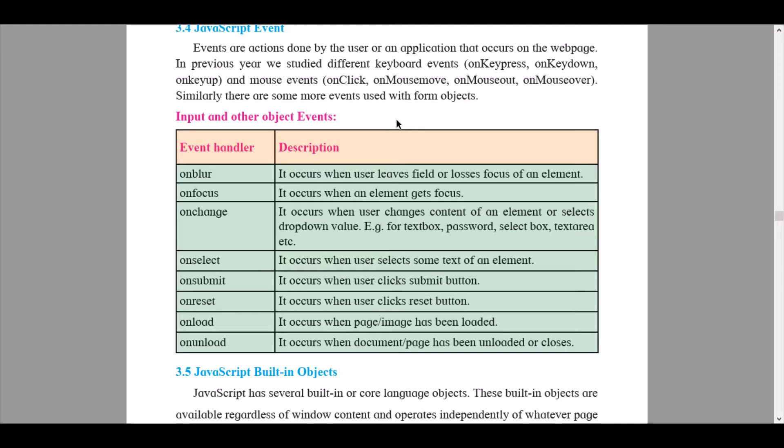The first event handler is 'onblur' — it occurs when the user leaves a field or loses focus of an element. 'Onfocus' occurs when an element gets focus. 'Onchange' occurs when the user changes the content of an element or selects a dropdown value — for example, text box, password, select box, textarea, etc. 'Onselect' occurs when the user selects some text of an element.